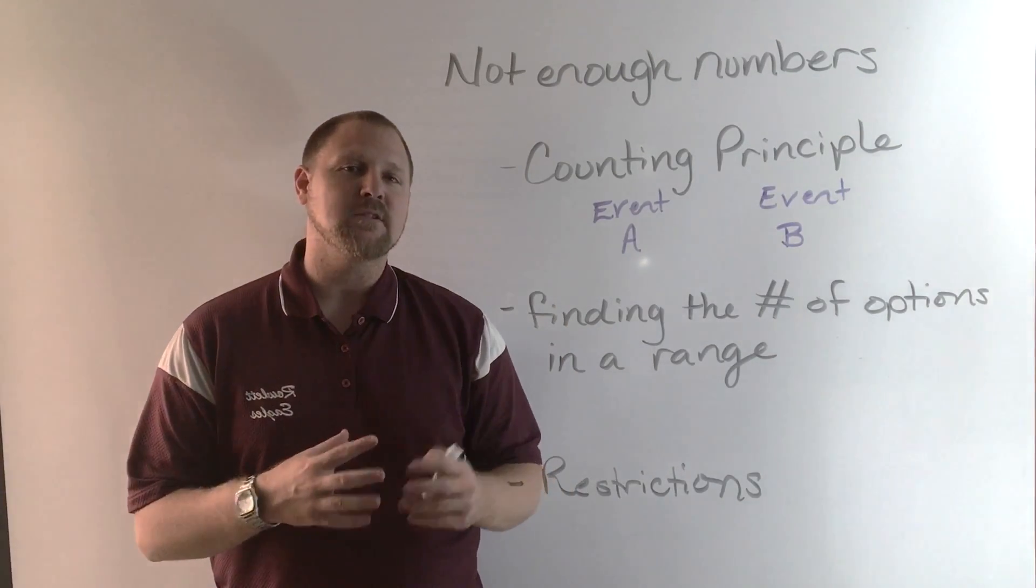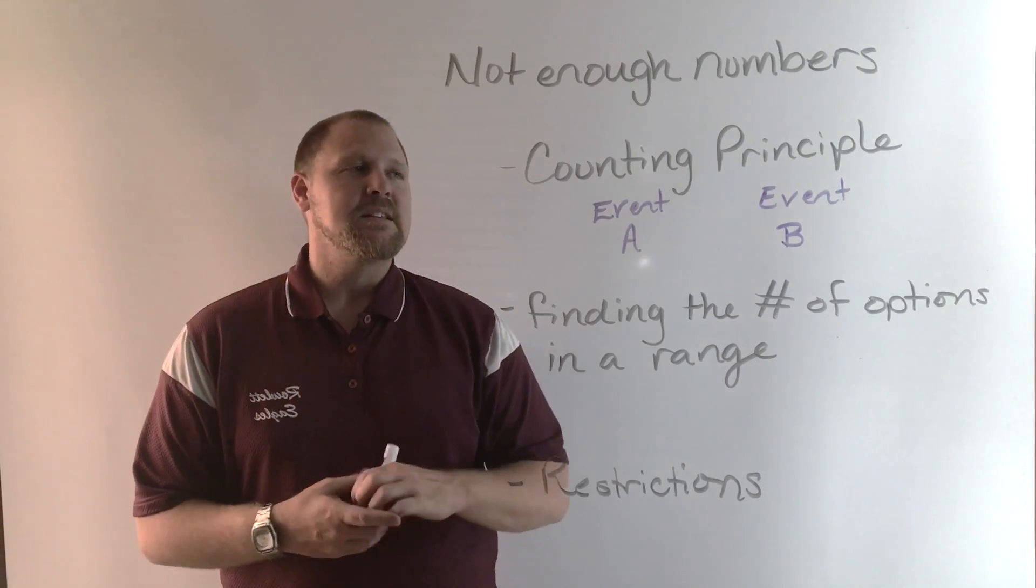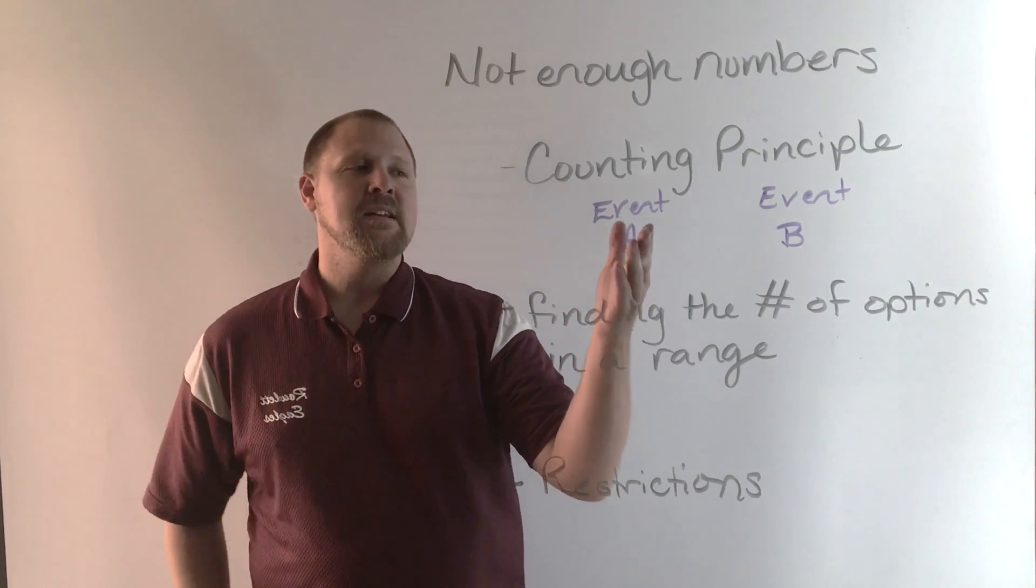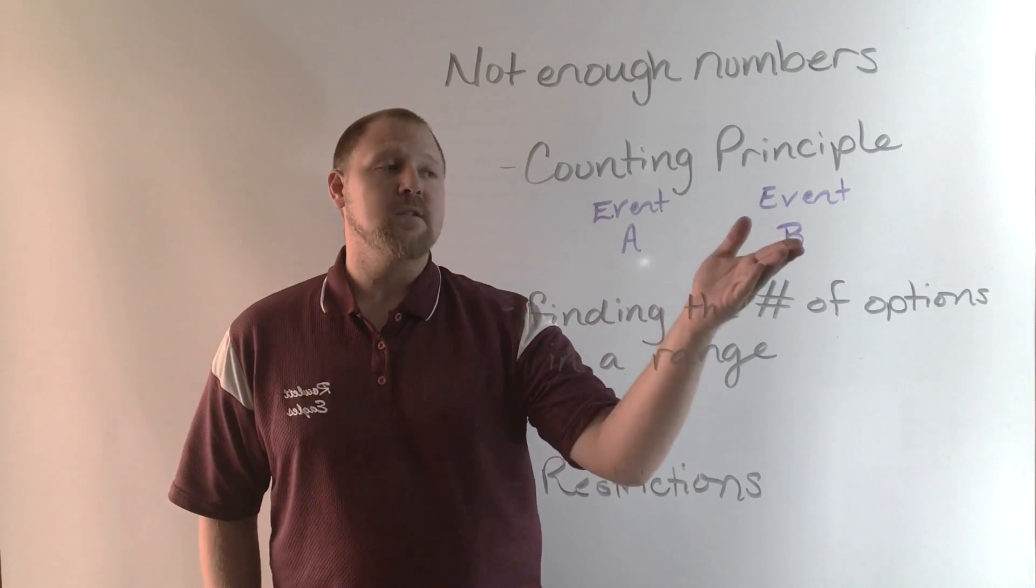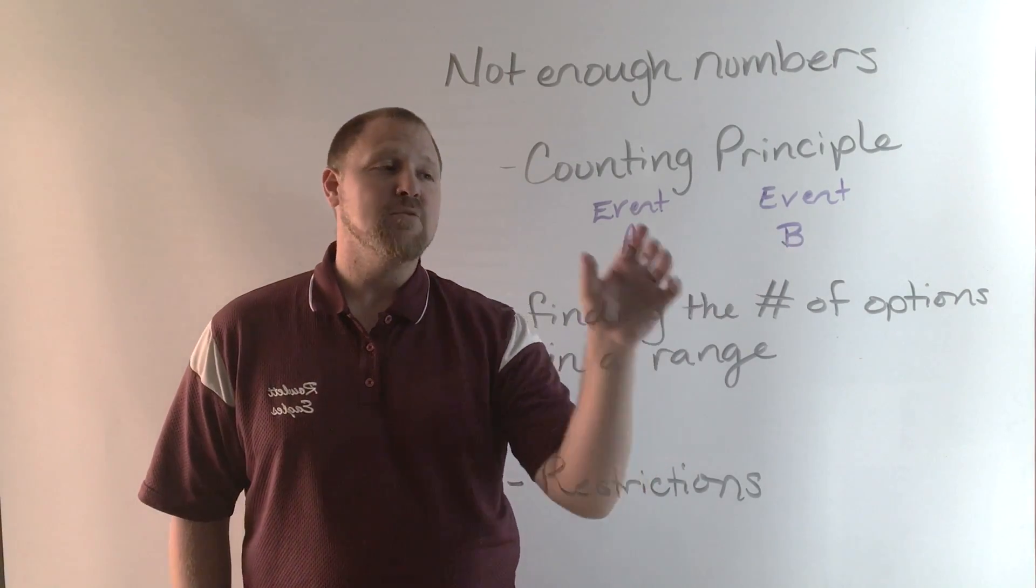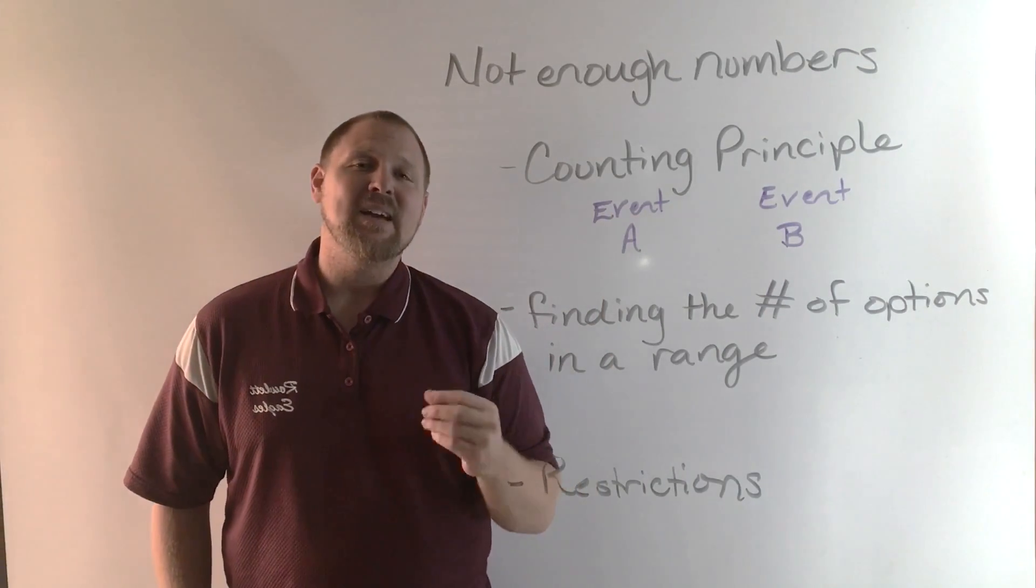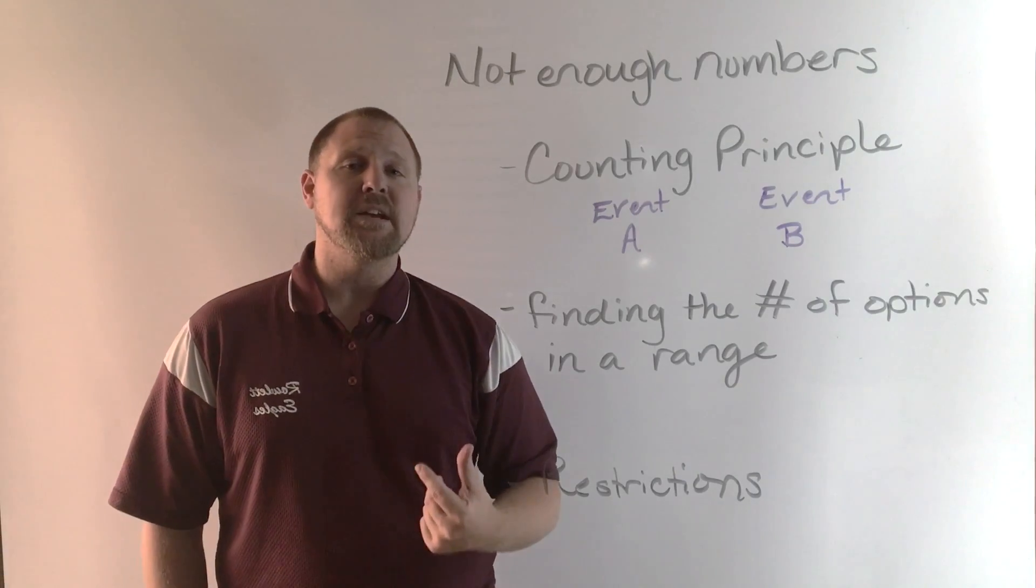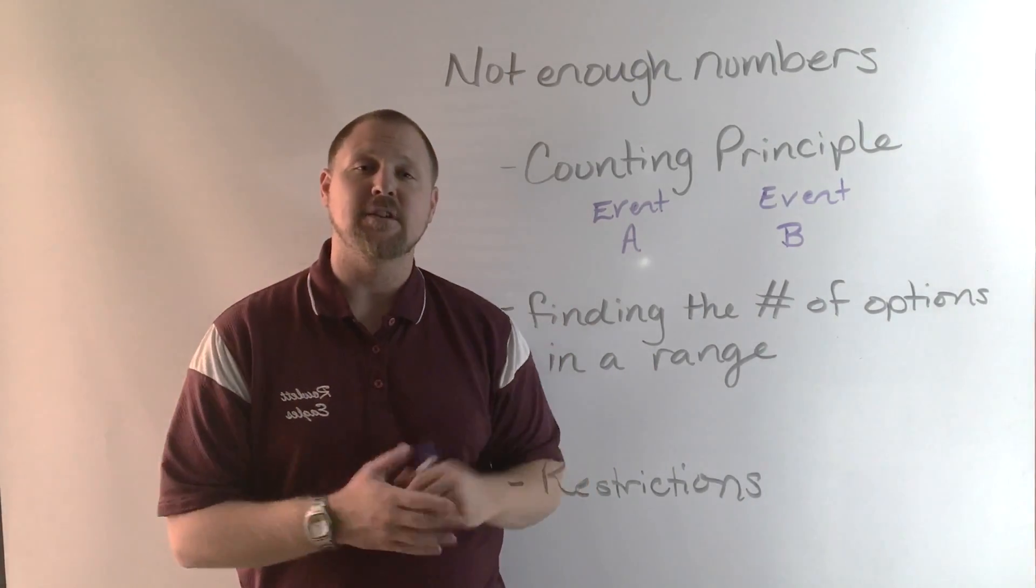The counting principle is the major topic or concept to be addressed in this unit. The counting principle simply says that for the number of options in event A and event B, you multiply the options for A times the options for B, and that gives you the total possible combinations of those two events happening one after the other.